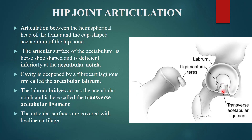The articular surface of the acetabulum is horseshoe-shaped and is deficient inferiorly at the acetabular notch. This cavity is deepened by a fibrocartilaginous rim called the acetabular labrum. The labrum bridges across the acetabular notch, and where it does so it is called the transverse acetabular ligament.